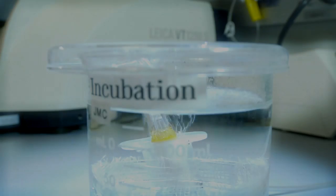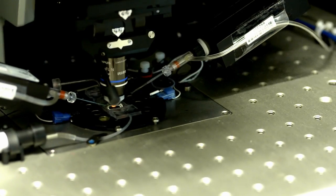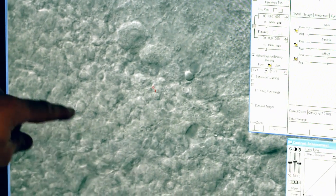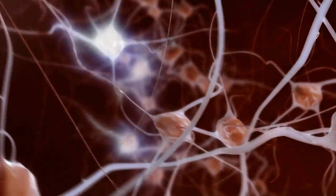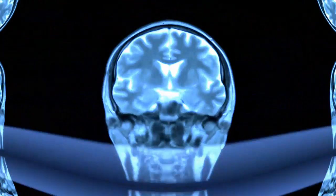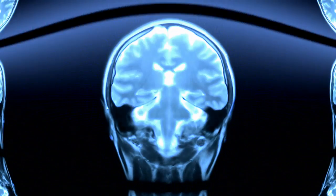These researchers are already looking at how our brain develops during infancy, how different life experiences shape our brain, how information passes from one neuron to the next, and how memories are stored. And that's just the start.